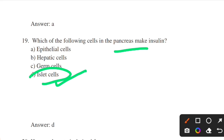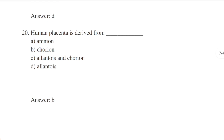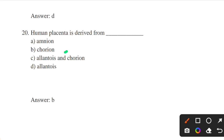Which structure is the human placenta derived from? Options: amnion, chorion, allantois, chorion-allantois. Answer: option B — chorion. Human placenta is derived from the chorion. The chorion and amnion together form the amniotic sac.